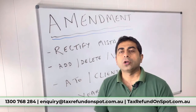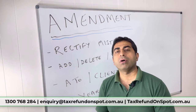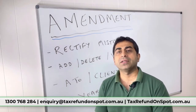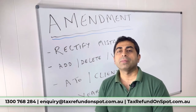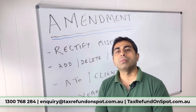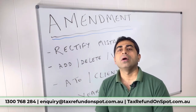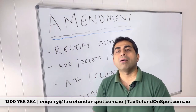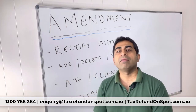The topic for today is amendment. What is amendment? Amendment means when you lodge a tax return and you made some mistake. Mistakes can be anything — you forgot to put your spouse details, forgot to include a source of income, for example interest income, or you put in the wrong amount, a less amount or a higher amount.